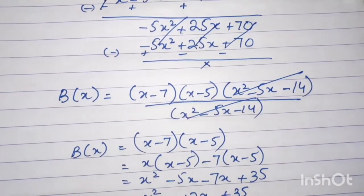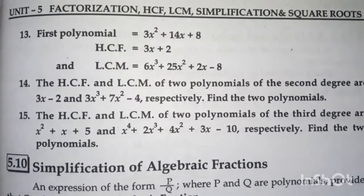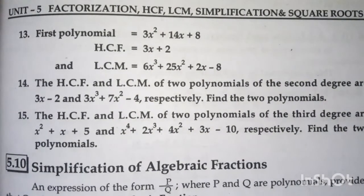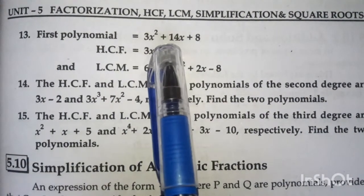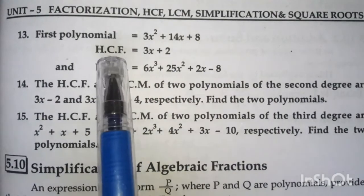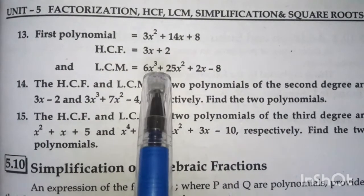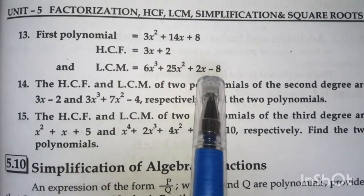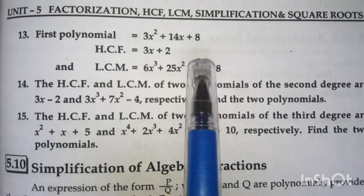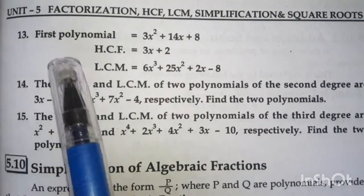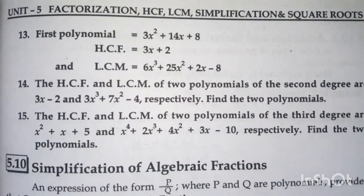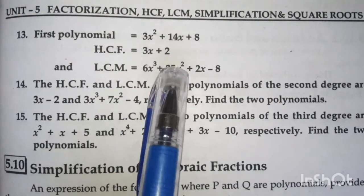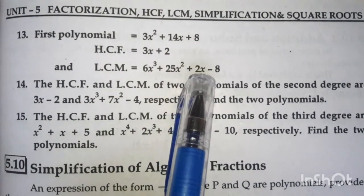Now let's look at question number 13. You have to find the second polynomial when the first polynomial is 3x squared plus 14x plus 8, the HCF is 3x plus 2, and the LCM is 6x cubed plus 25x squared plus 2x minus 8. This is your homework — solve question number 13 the same way we solved questions 11 and 12, and find out the second polynomial.